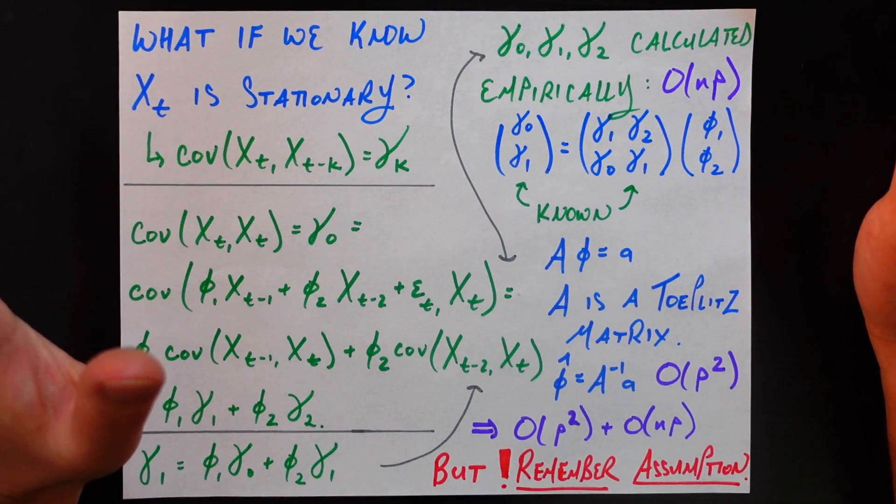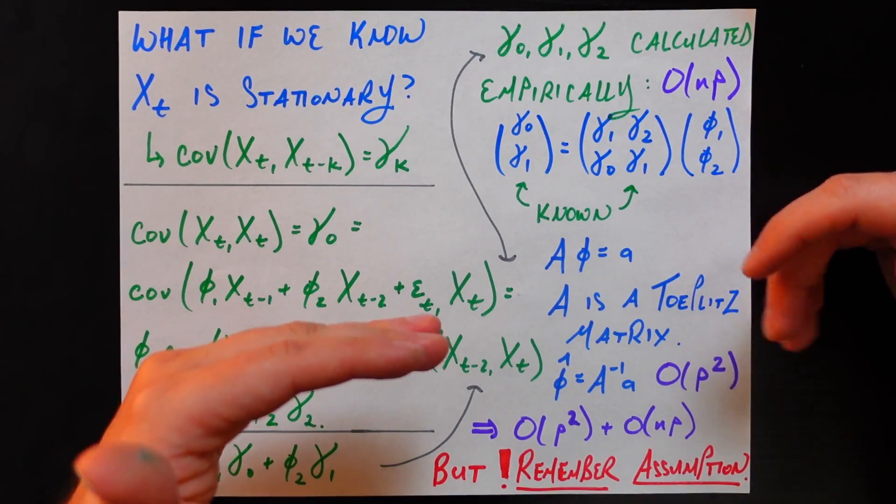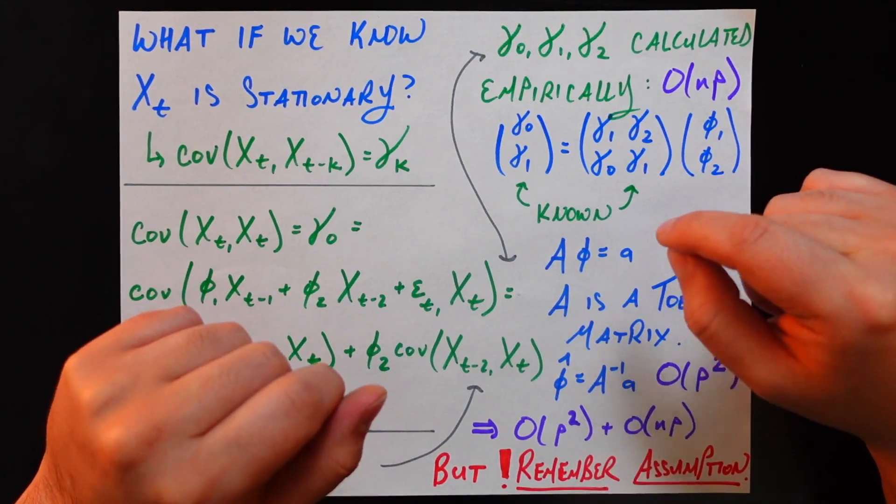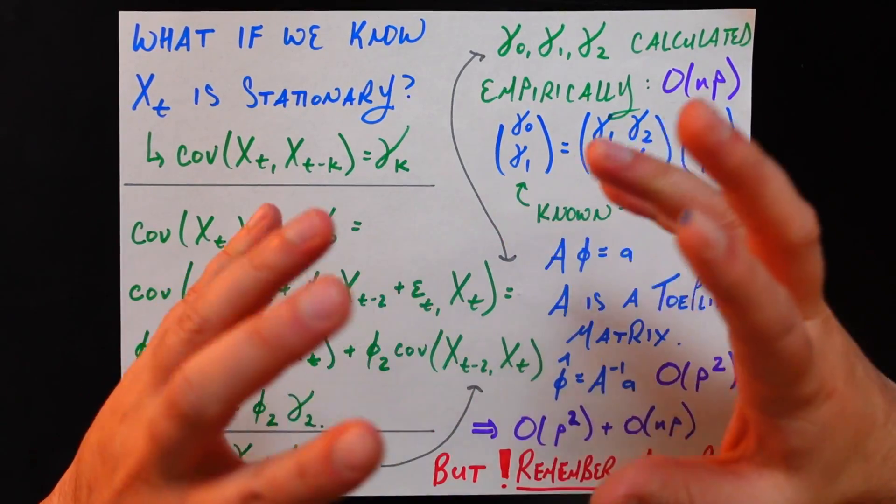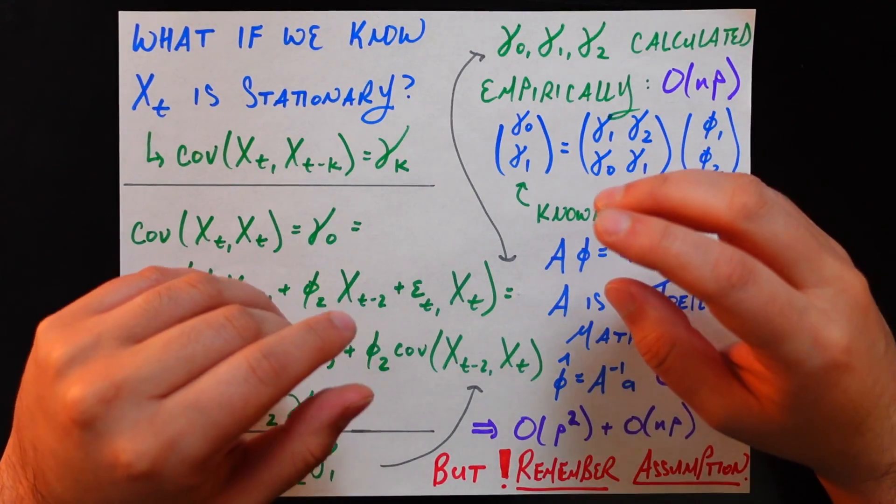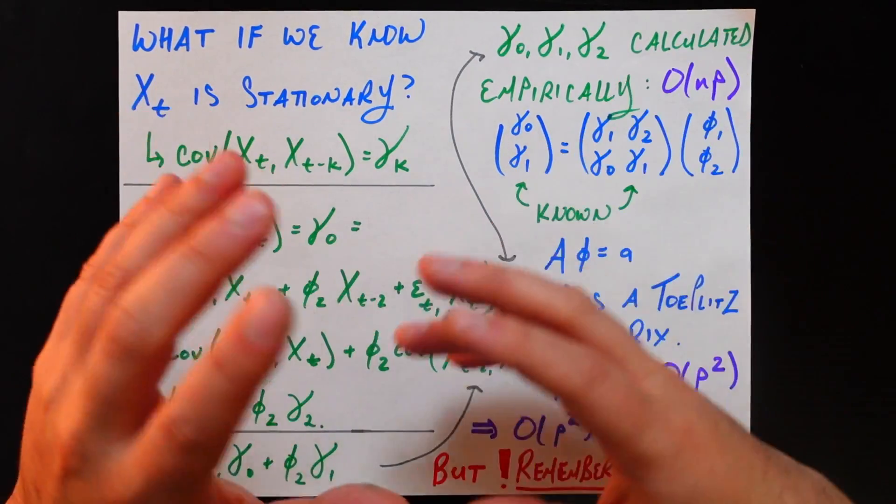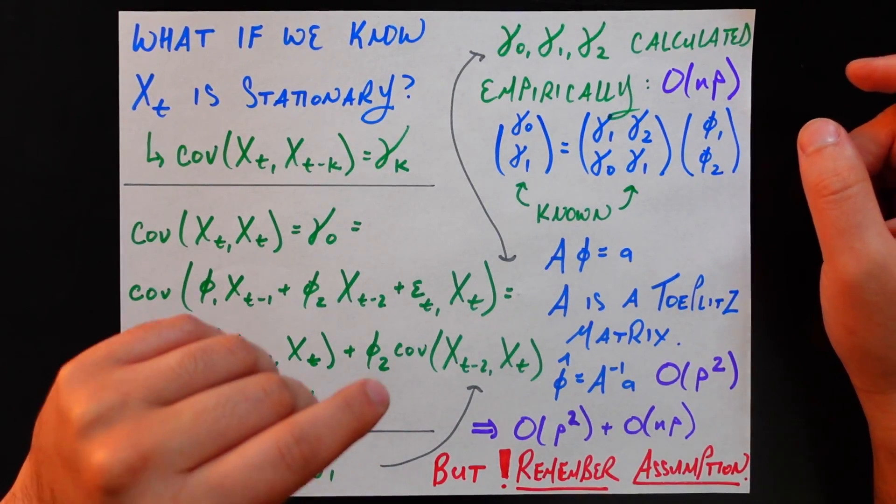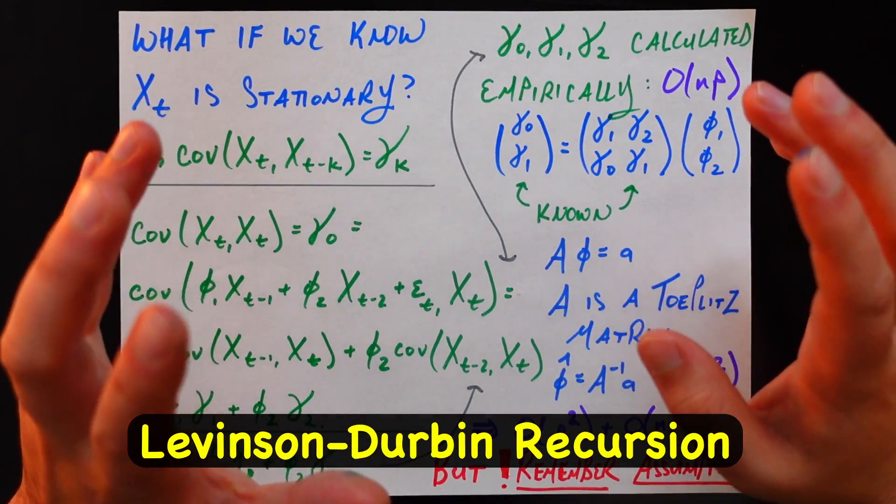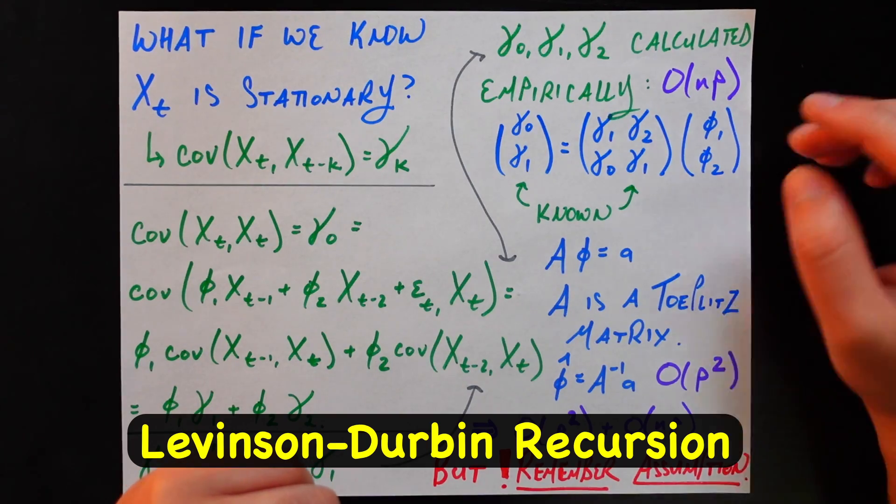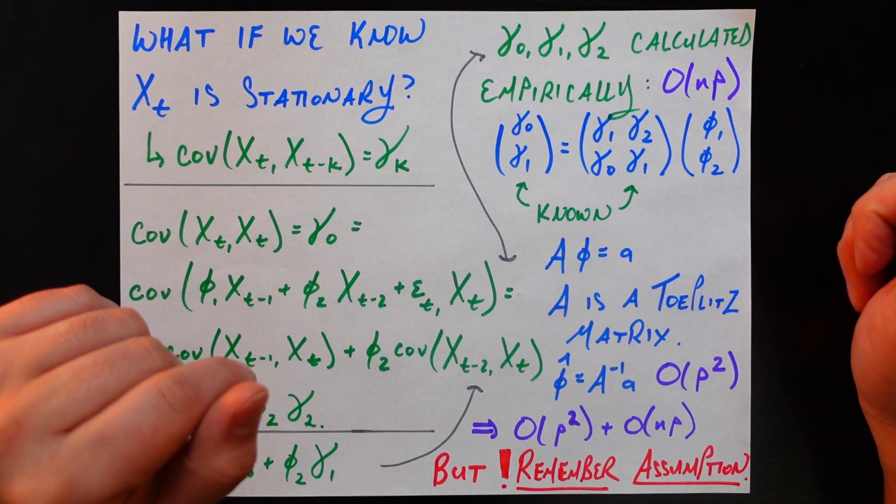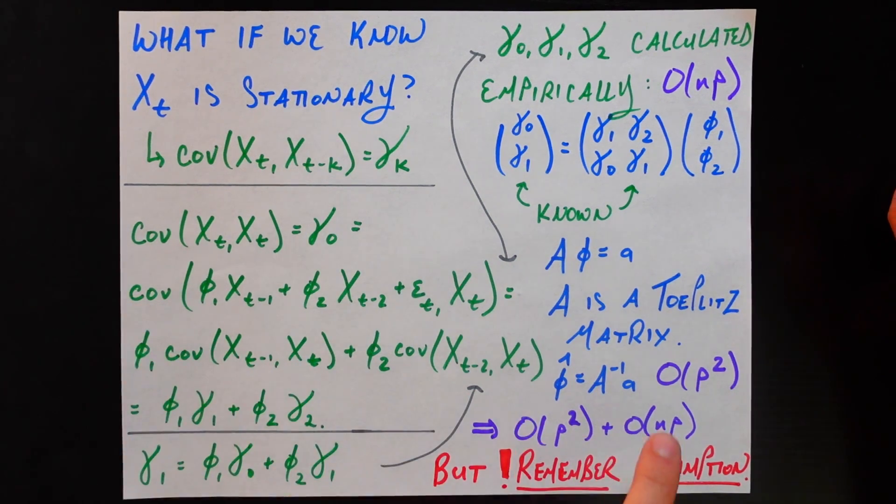Now why did I spend all this time and bring up this new term called a Toeplitz matrix? Because taking the inverse of a Toeplitz matrix is not an O(P^3) operation. Because of this form of the Toeplitz matrix, and that's not something I'm going to dive into this video, it's not all about Toeplitz matrices and how they work and why taking the inverse is more efficient. But there is a method called Levinson-Durbin recursion that you can apply if you know the matrix is Toeplitz, like we have for these right here, that is going to allow us to take the inverse of that matrix in O(P^2) time instead of O(P^3) time.